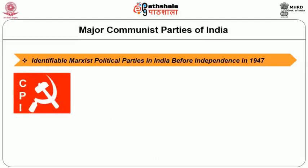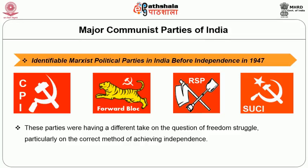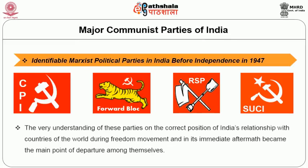The identifiable Marxist political parties in India before independence in 1947 were the Communist Party of India (CPI) formed in 1920, the Forward Bloc and the Revolutionary Socialist Party formed in 1939. The Socialist Unity Centre of India was formed immediately after independence in 1948. These parties had a different take on the question of freedom struggle, particularly on the correct method of achieving independence. Interestingly, the very understanding of these parties on the correct position of India's relationship with countries of the world during the freedom movement and in its immediate aftermath became the main point of departure among themselves.